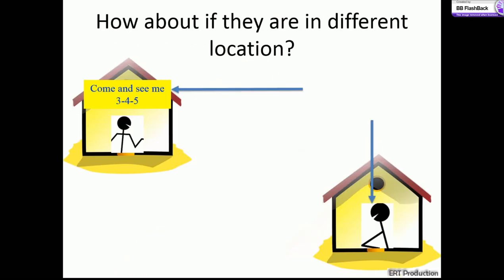How about if these two people are in fact in two different locations? As before, they still need the same protocols among themselves. However, this time they still cannot communicate. Why?